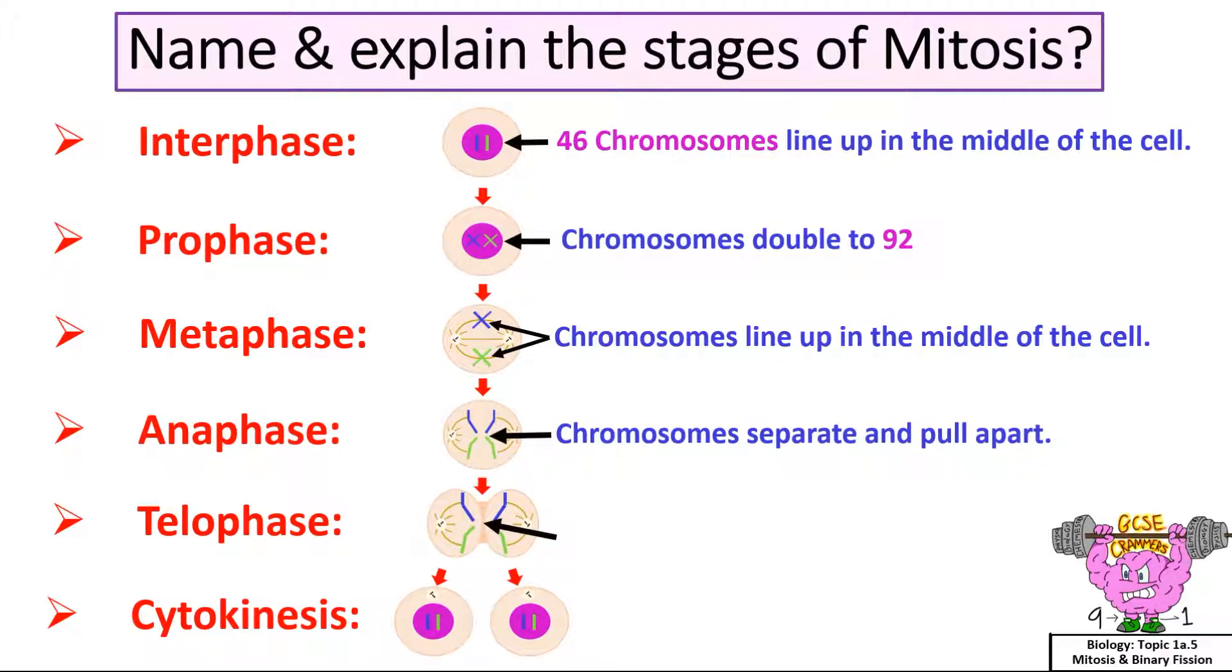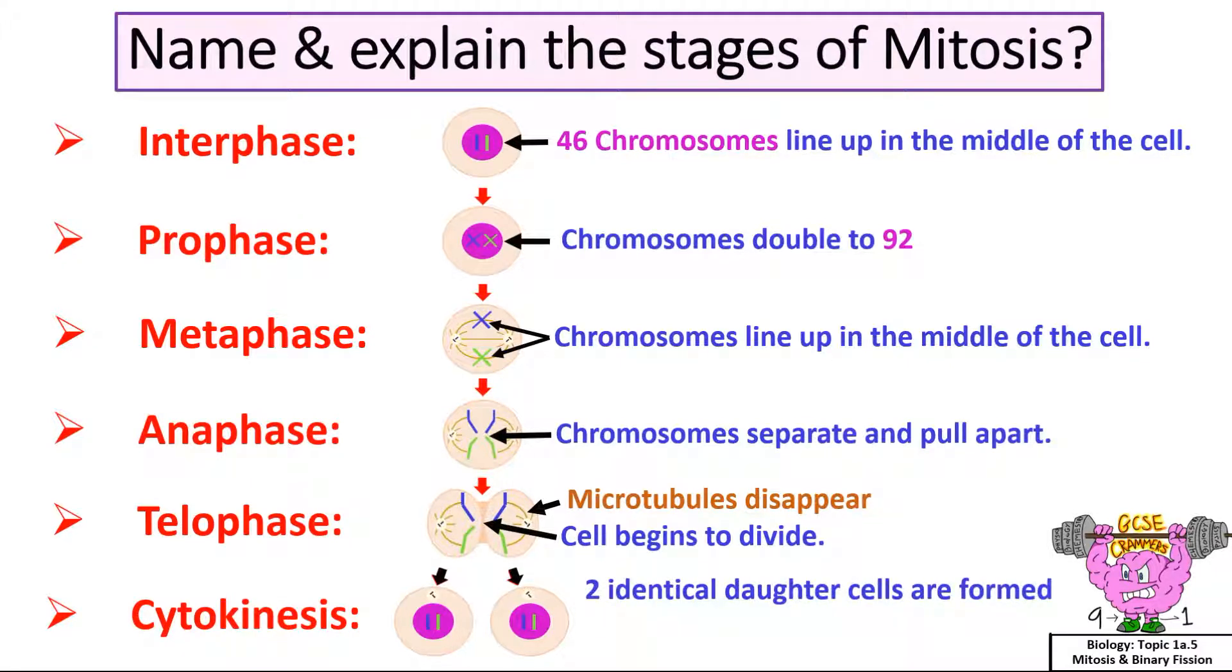During telophase, the cell begins to divide and the microtubules disappear. And lastly, enter cytokinesis, where two identical daughter cells are formed, each with 46 chromosomes. Now you might be thinking, do I really have to learn all the stages for the exam? Yes, you do. Go over this slide until you know it inside out.